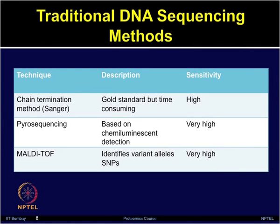Let us compare some traditional DNA sequencing methods. The chain termination method, or Sanger method, is the gold standard but is very time consuming. Sensitivity is high, but in pyrosequencing, which is based on a luminescent detection system, the sensitivity is very high. Multi-TOF can also be employed if the aim is to identify variations in SNPs, where sensitivity is also very high.